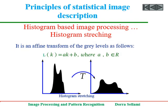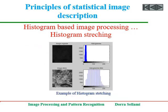Histogram stretching is an affine transform of the grey levels that aims at making the image more contrasted. Here is an example of histogram stretching: the stretched image has clearer levels and details appear better.